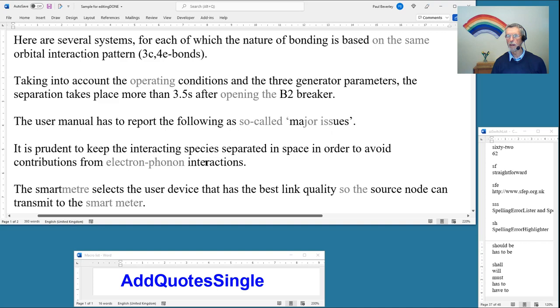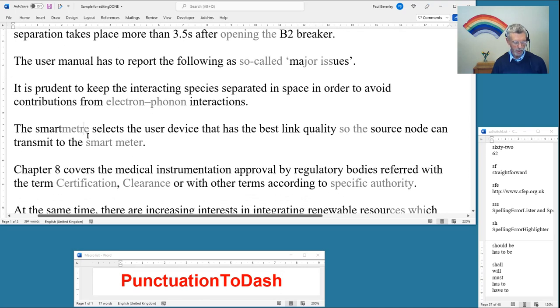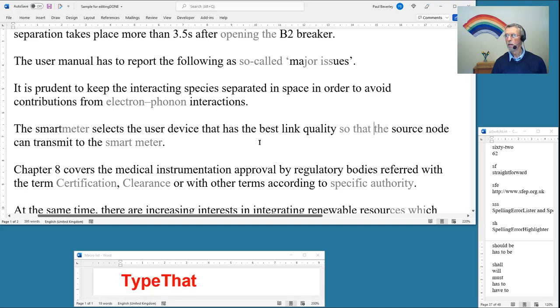It is prudent to keep the interacting species separated in space in order to avoid contributions from electron-phonon. Oh, that should be a dash there. The smart meter, well that's obviously smart meter, not mitra, so switch those around. The source node concerns me. Oh, smart meter, it's now two words, so I should join them up.